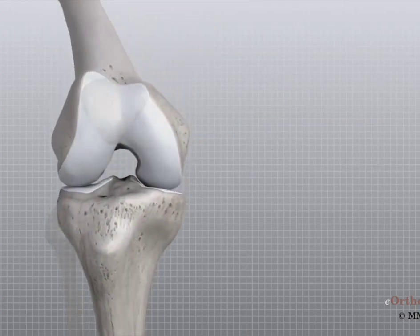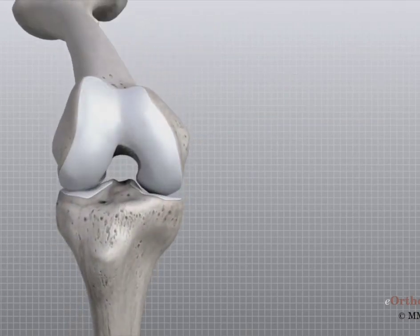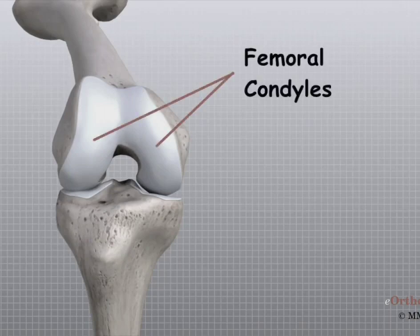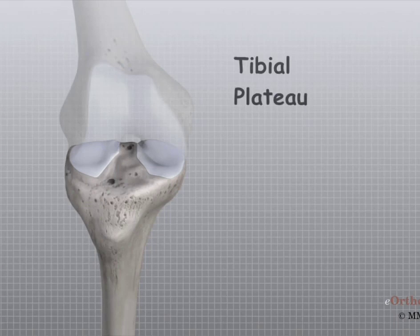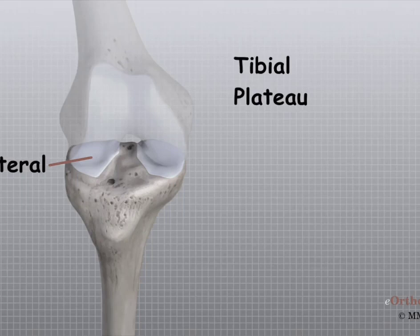The end of the femur joins the top of the tibia to create the knee joint. Two round knobs called femoral condyles are found on the end of the femur. These condyles rest on the top surface of the tibia, called the tibial plateau. The outside half, farthest away from the other knee, is called the lateral tibial plateau, and the inside half, closest to the other knee, is called the medial tibial plateau.